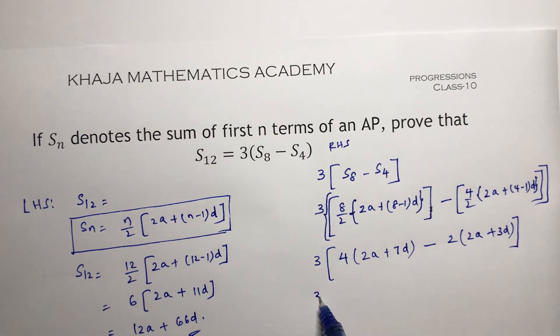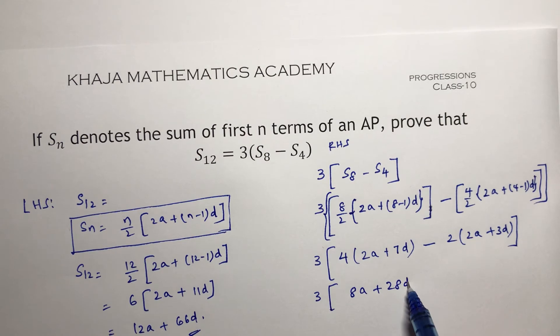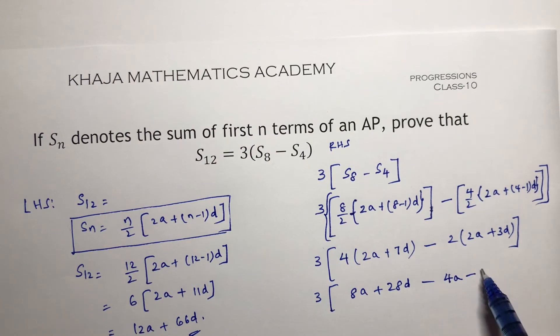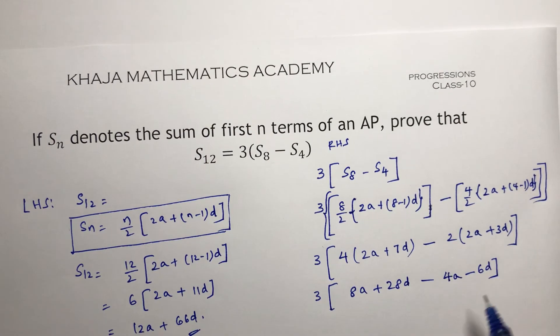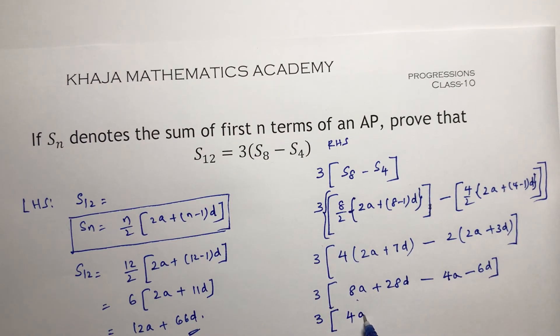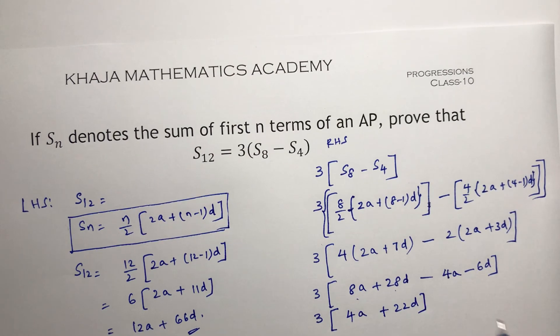So if I calculate 3 into 4 times 2, 4 times 7, 28D minus 2 times 2, 4A minus 2 times 3, 6D. So 3 times 8A minus 4A is 4A, and 28 minus 6 is 22D.